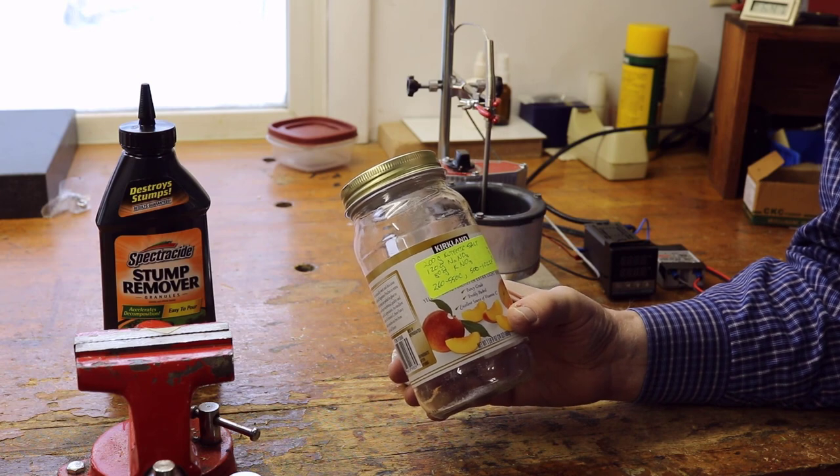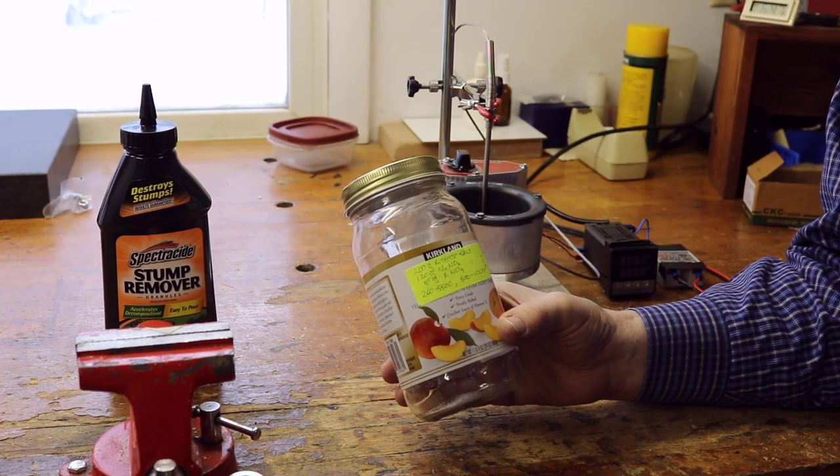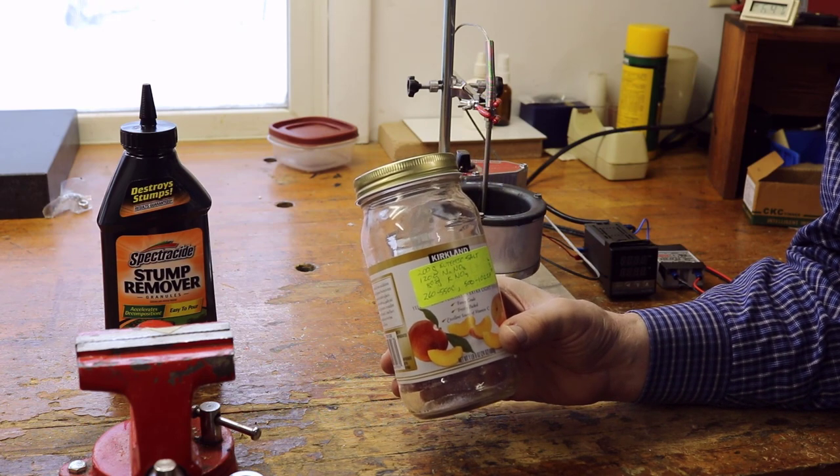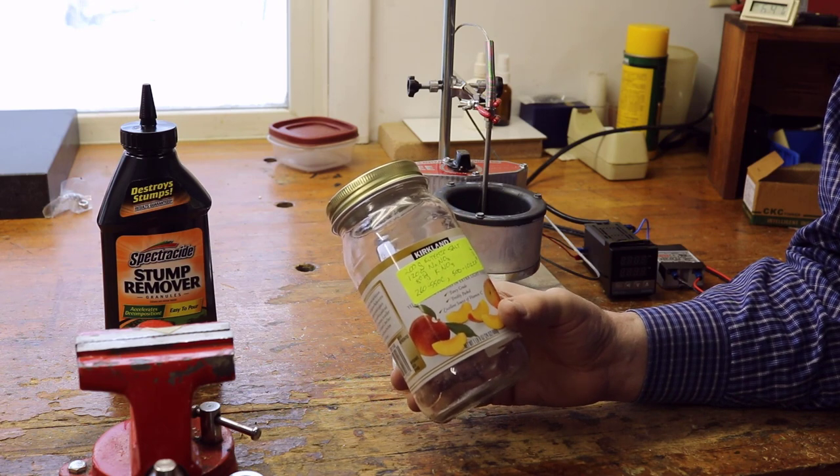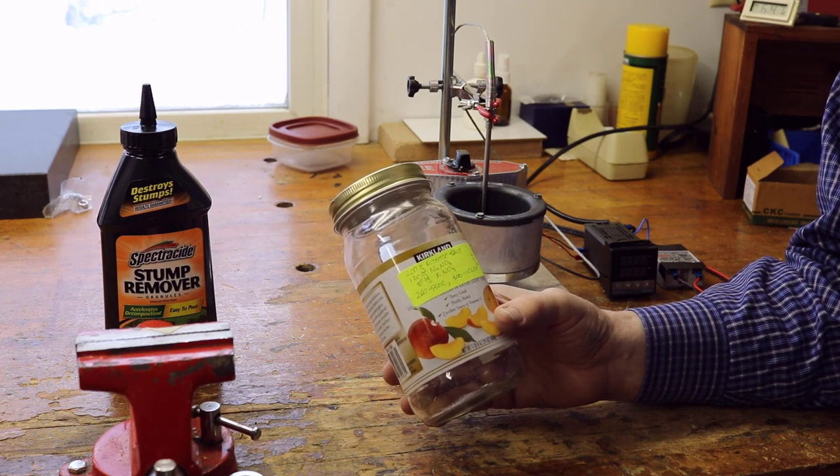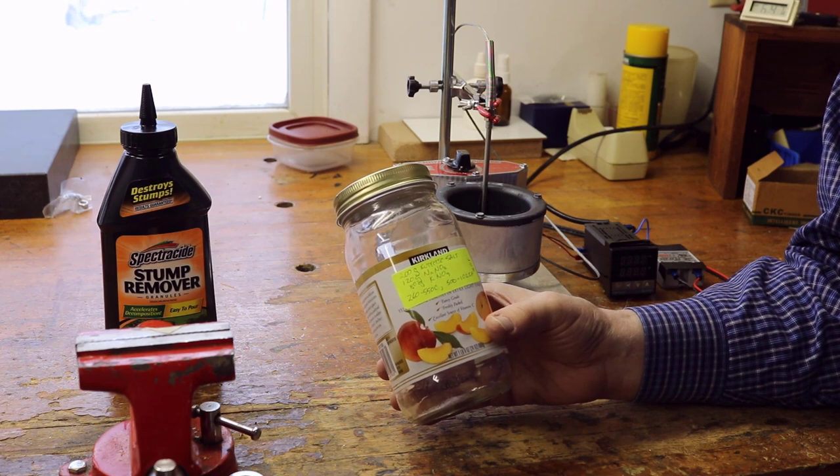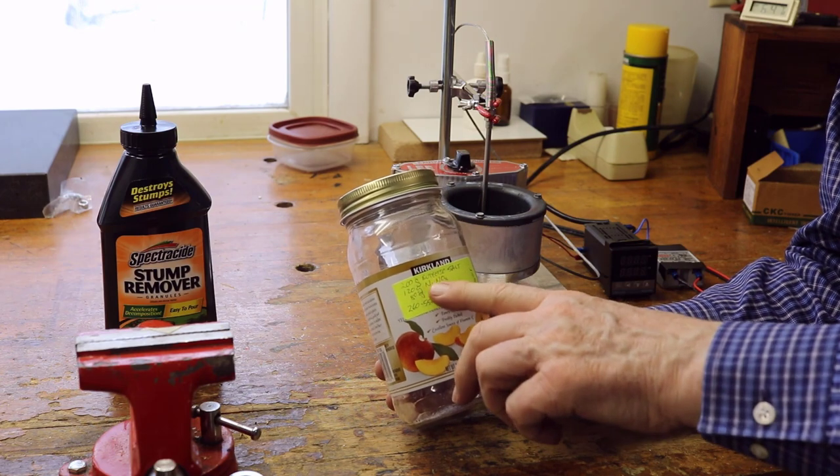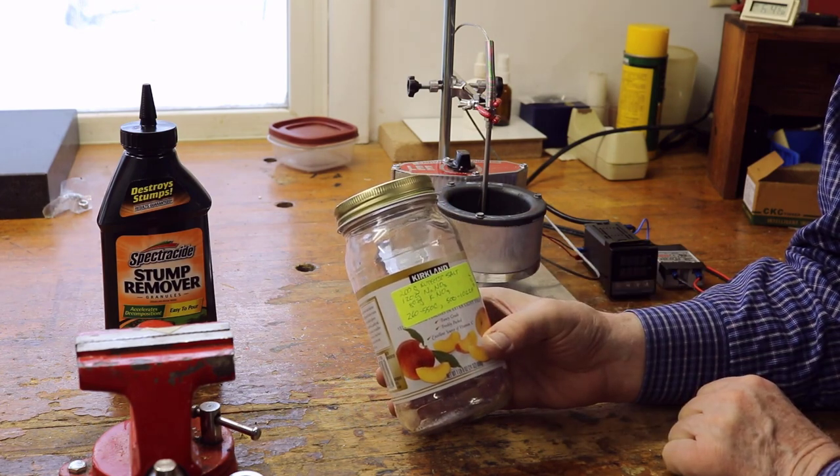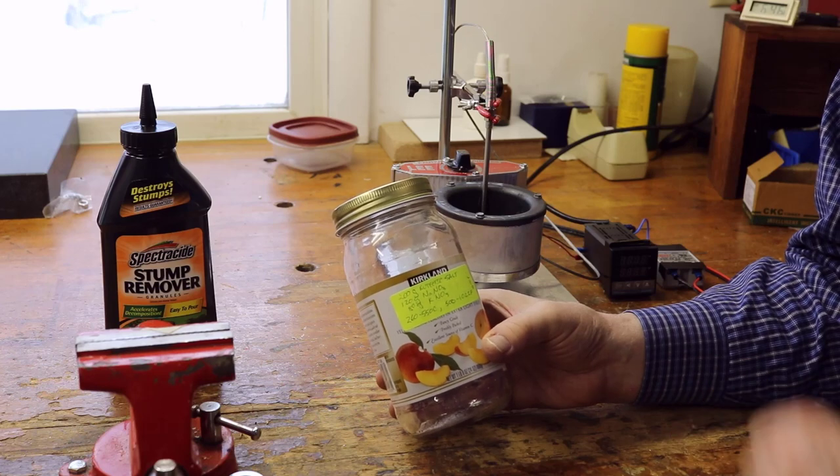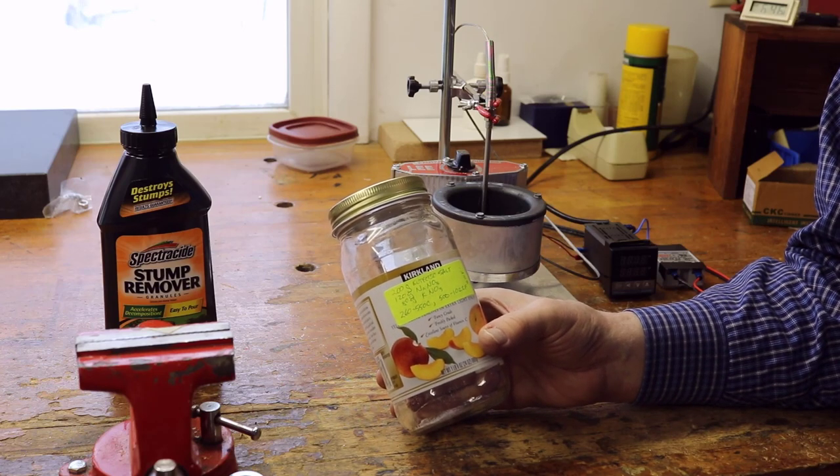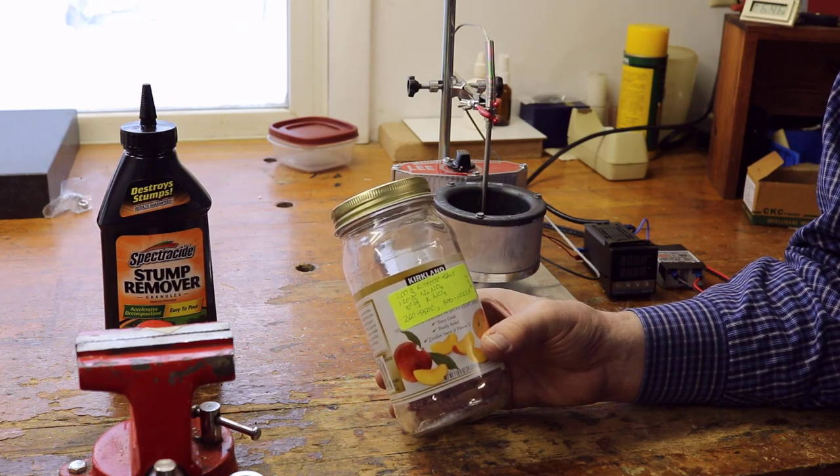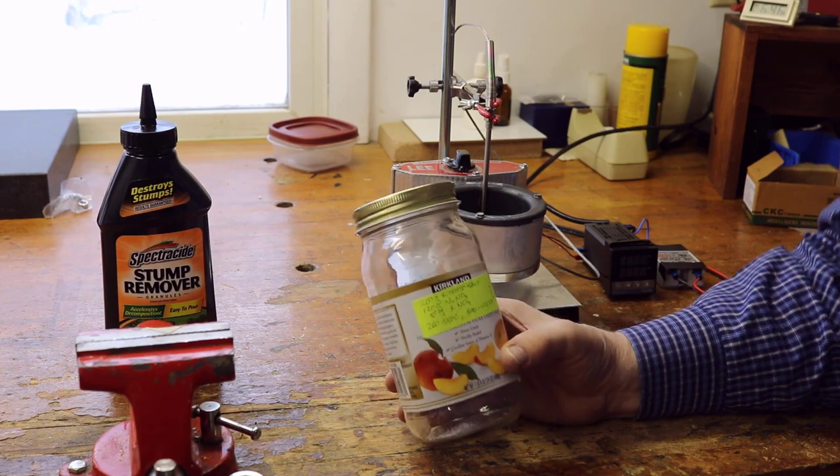So it turns out that you need about 90 grams of mixture to get the right depth in a pot the size of this Lee pot here. Okay, so it's going to be 36 grams of potassium nitrate and about 54 grams of sodium nitrate. And I would not mix those, I would measure each, put them in the cup and stir them up a little bit.